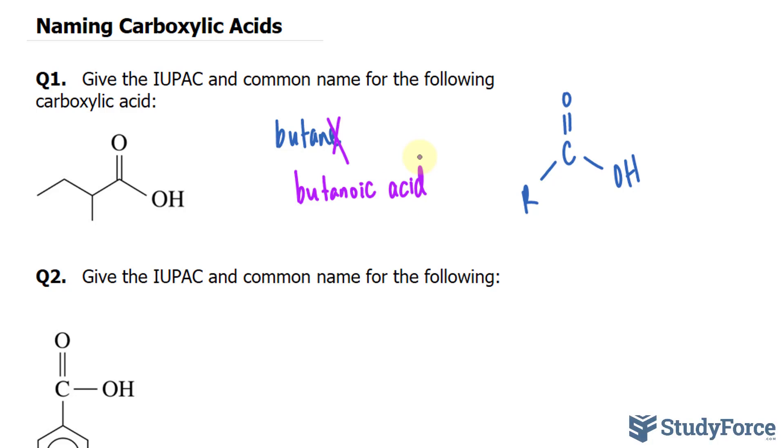The common name for this structure without this methyl group is butyric acid. So I'm just going to write that down for reference. Now we have to consider that we have a methyl, and you want to start labeling your carbons from where the carboxylic acid begins.